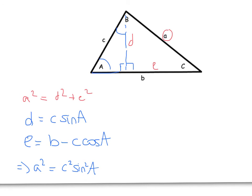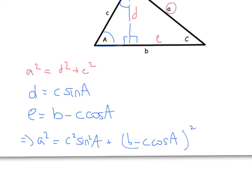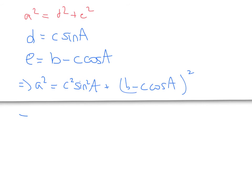So A squared equals C squared sine squared A - that's your D - plus B minus C cos A all squared. We need to expand this out. We've got A squared, still got C squared sine A squared, and we're going to end up with B squared minus 2BC cos A, plus C squared cos squared A at the end.